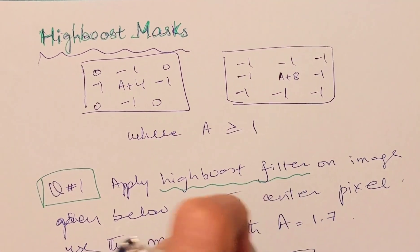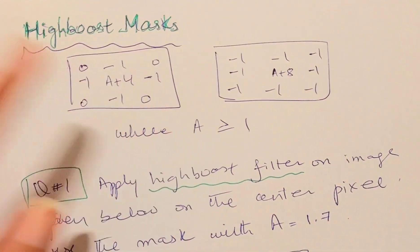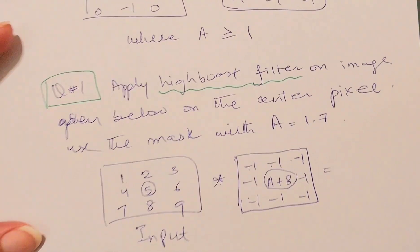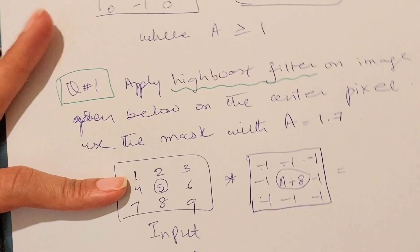For the purpose of enhancement of an image, the value of A is always larger than or equal to one. So let's solve an example: apply high boost filter on image which is given below.